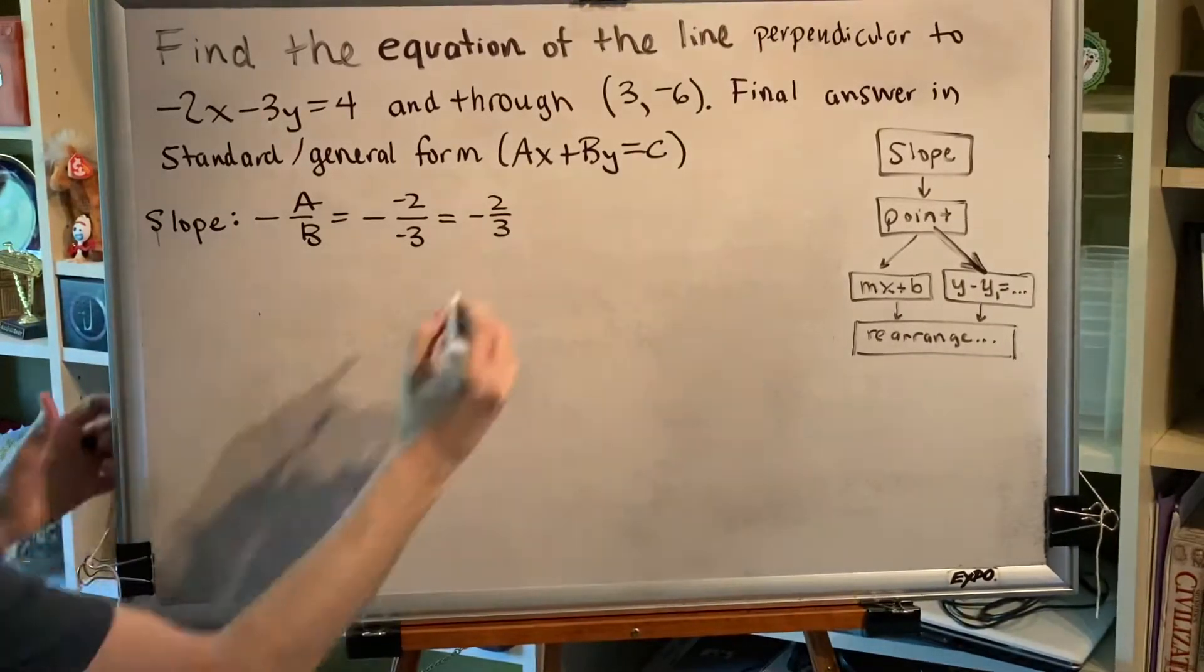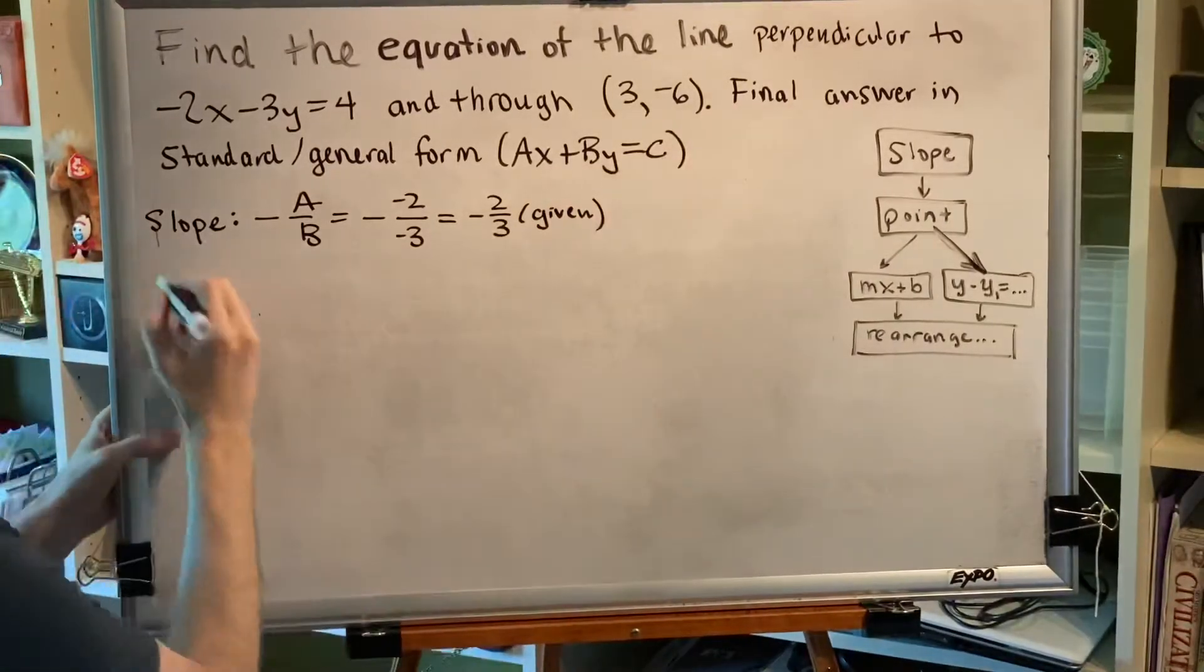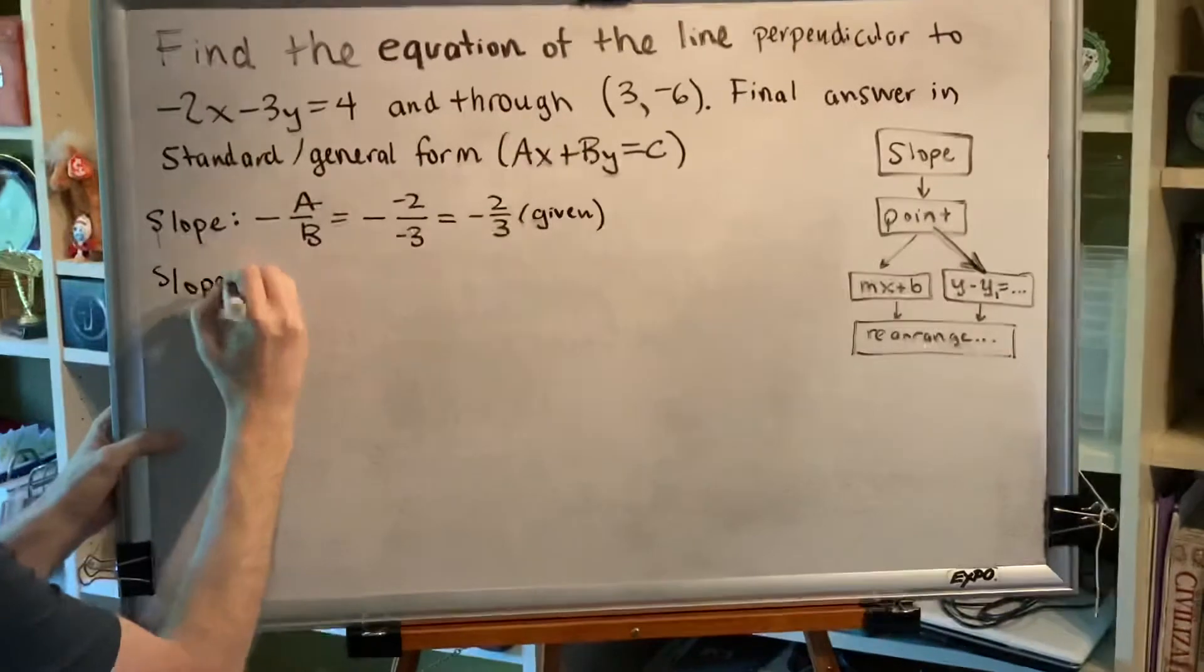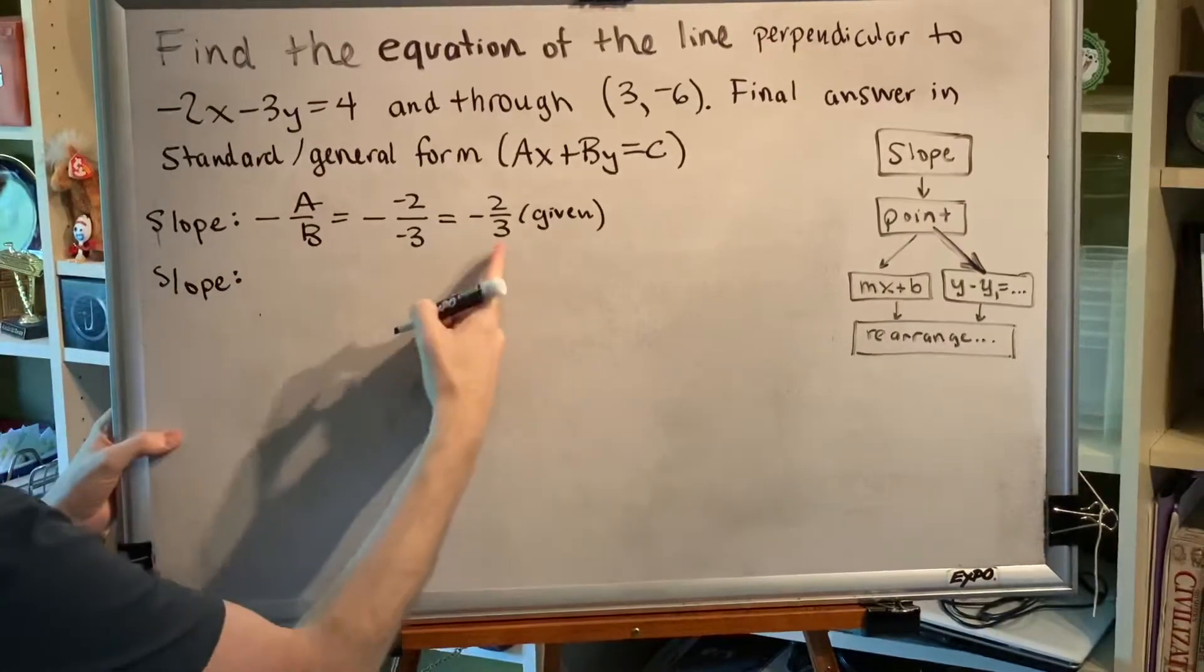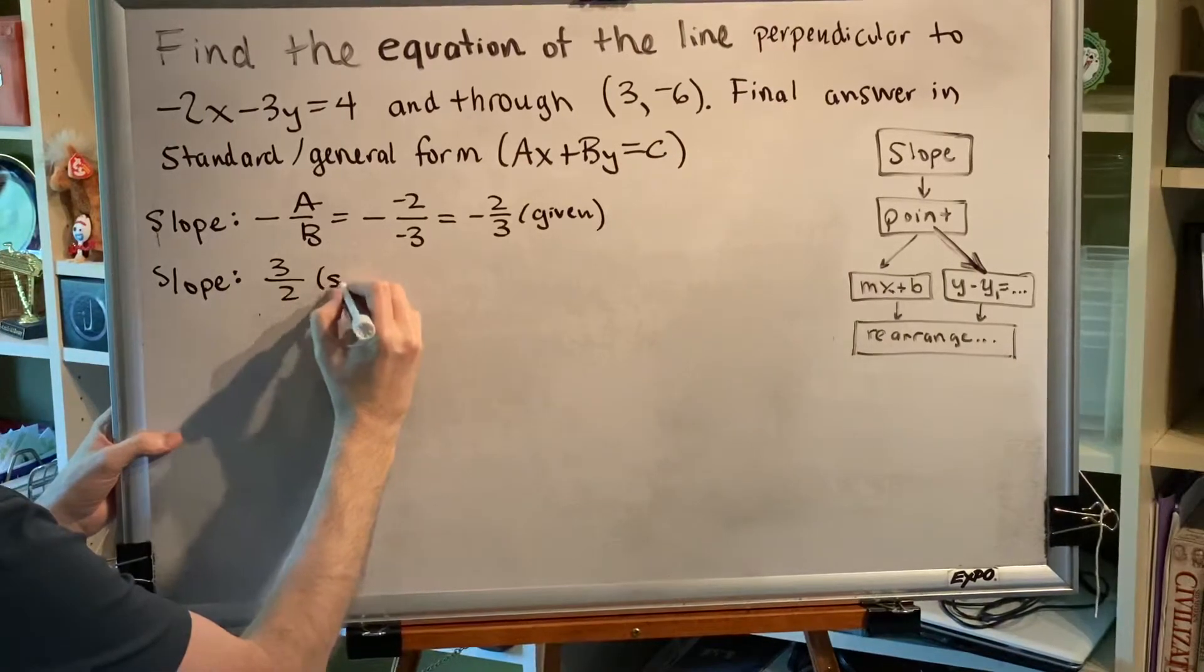Now that's the slope of the given line but the line that I want is perpendicular to that so the slope of our line needs to be the opposite reciprocal. So change the sign and flip it over and 3/2 will be the slope of our line.